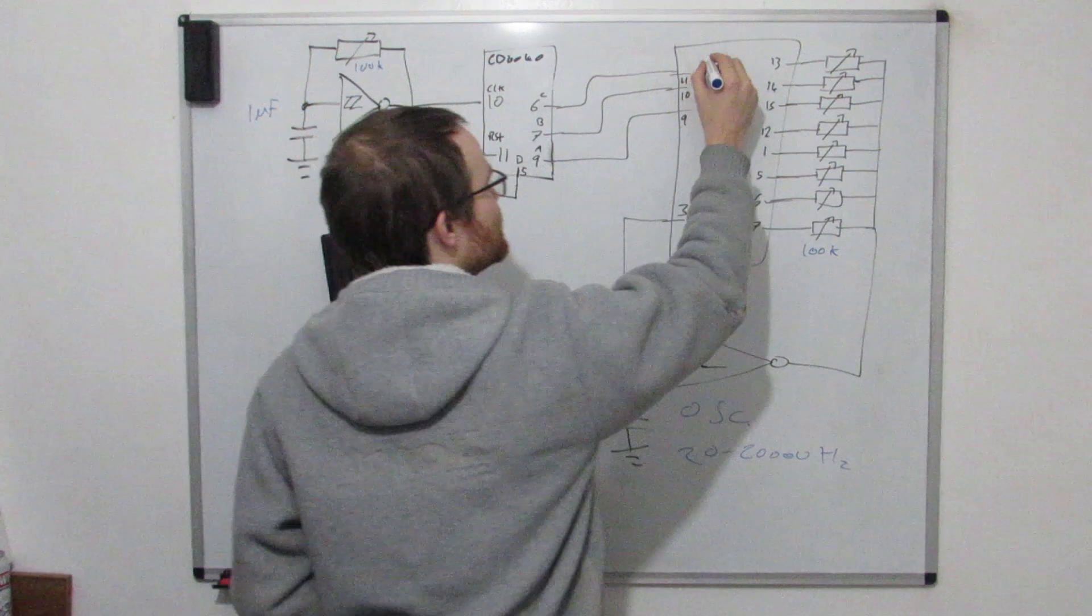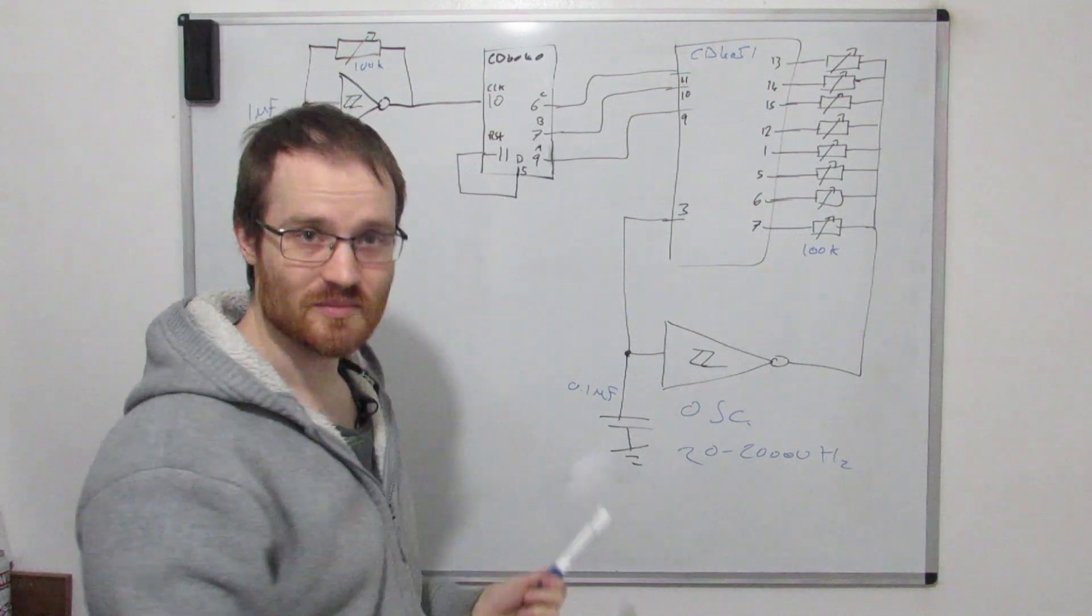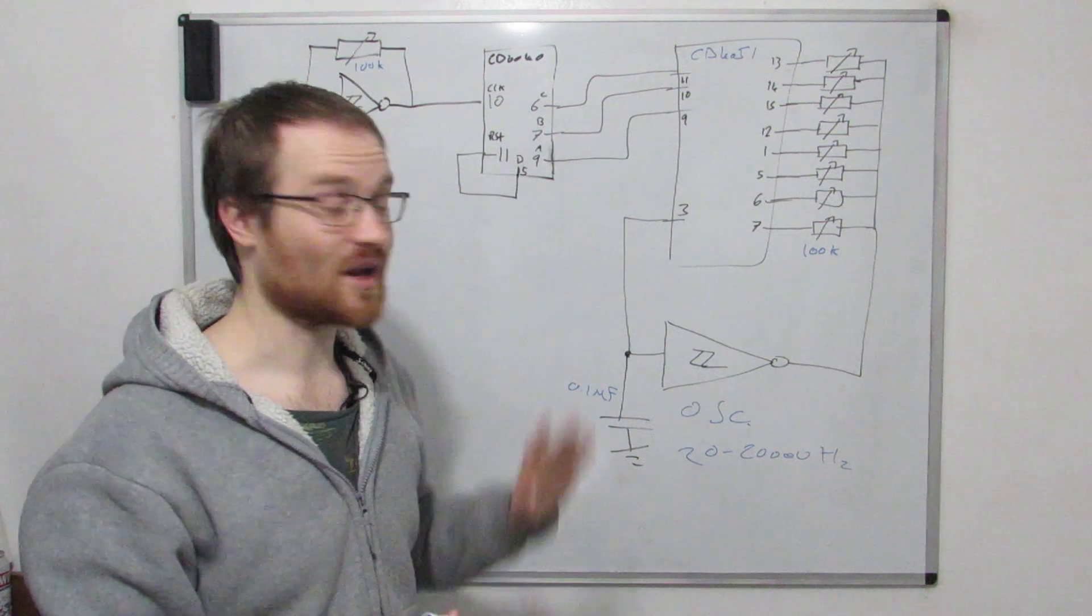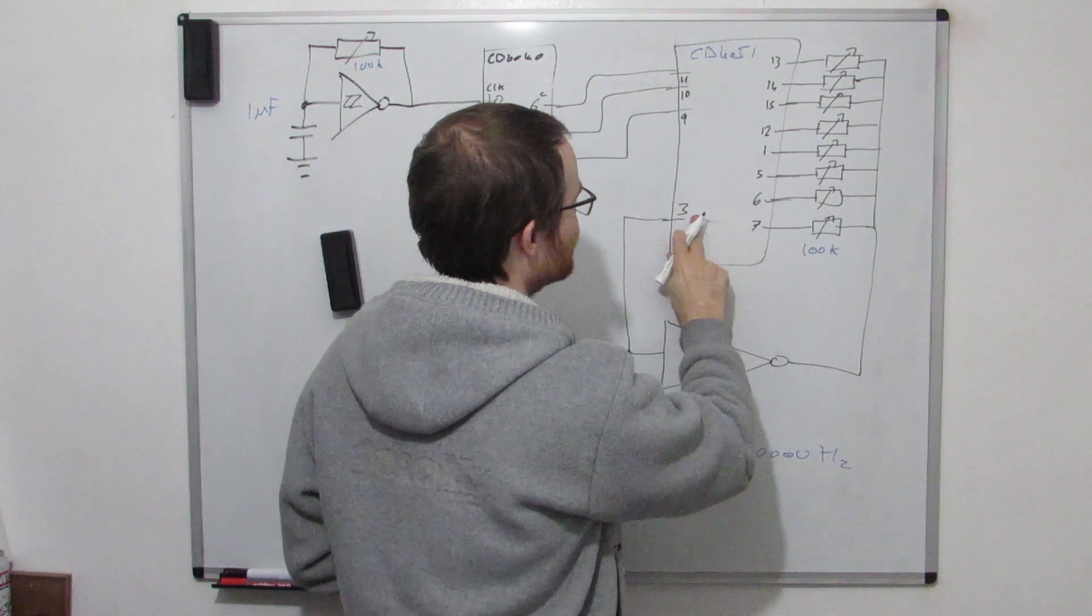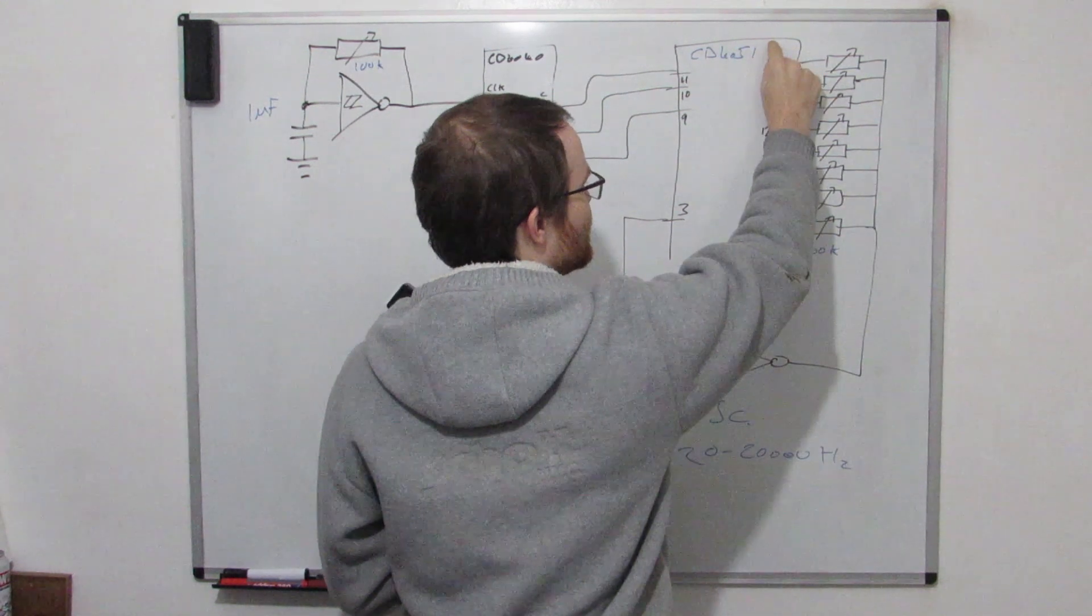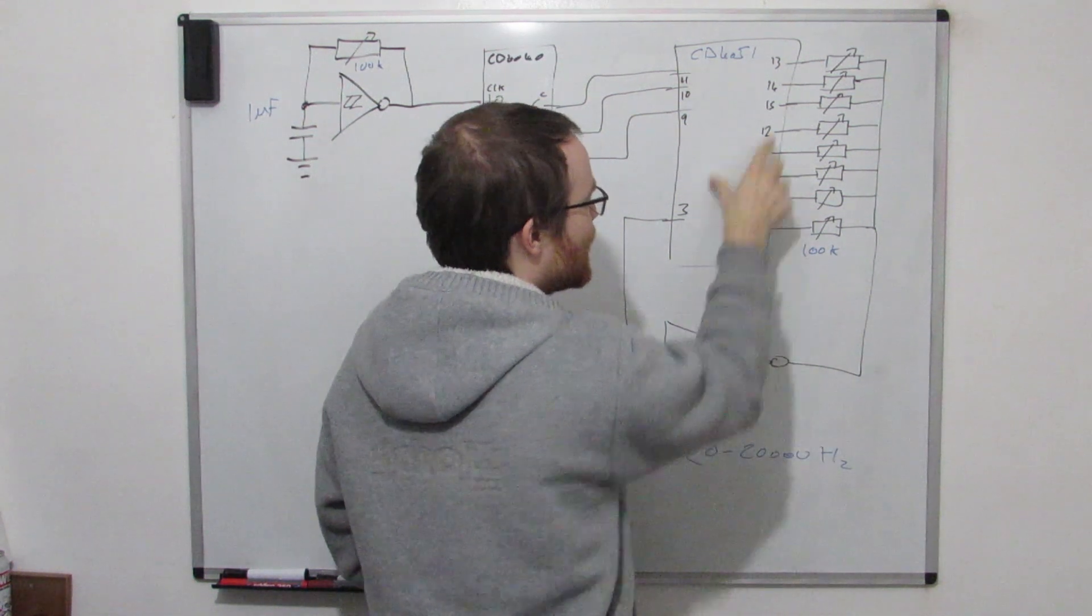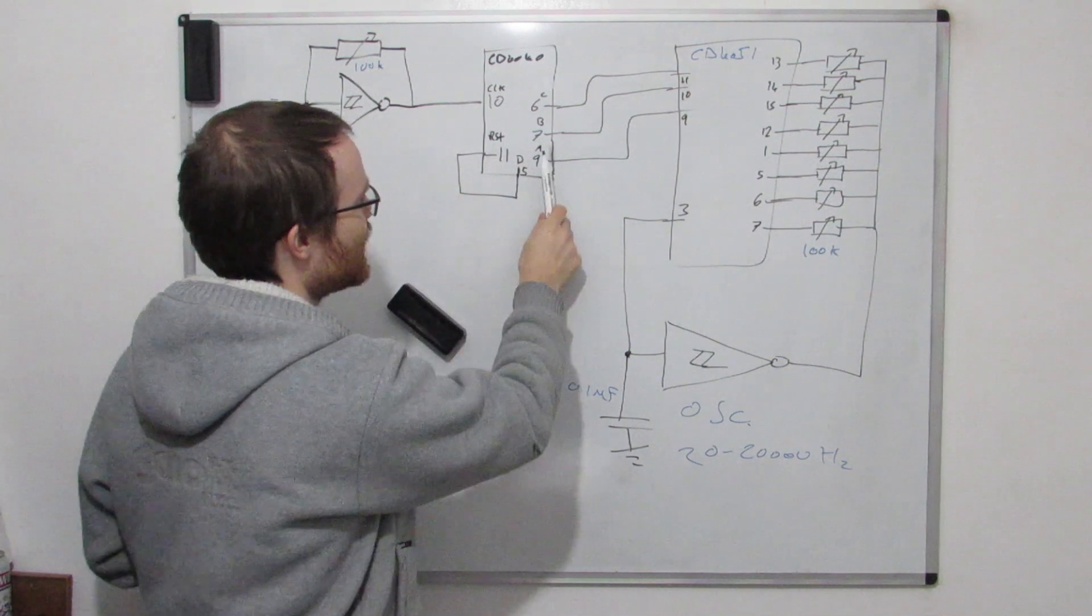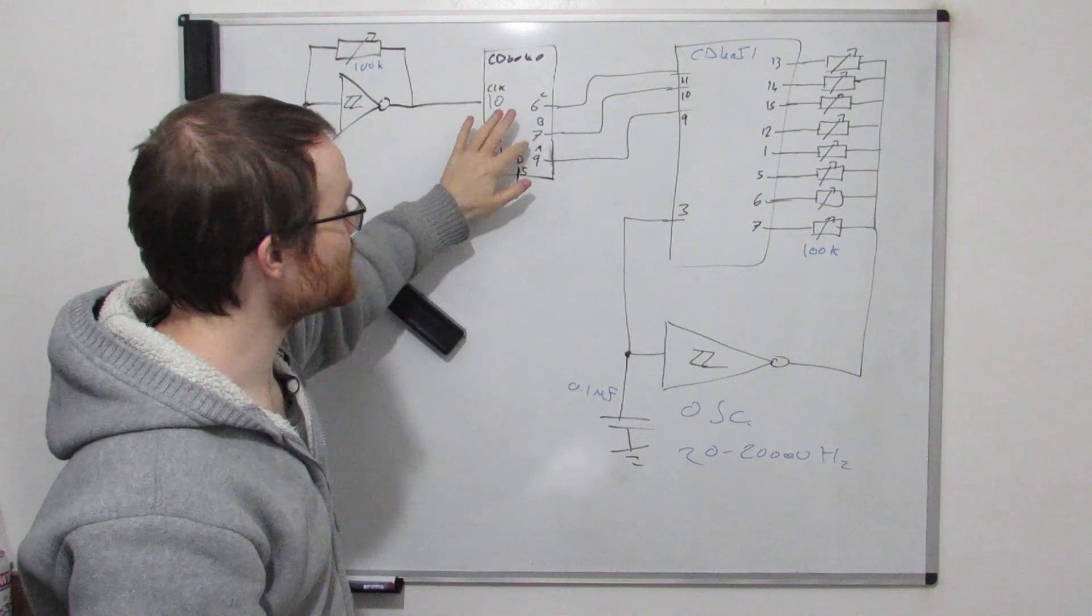So this is the CD4051, and what this is, is called a multiplexer, an 8 to 1 multiplexer, so you've got eight inputs, and you've got one output, and as I said before, it's gonna connect this one, well it'll do it the other way around actually, we're going from top to bottom, it'll connect this one, and then it'll connect this one, and then it'll connect this one, and then it'll connect this one, and so on, and then when it gets to the end, it'll go back to the start, because we've set this pin, so you can see I've got A, B, C here,